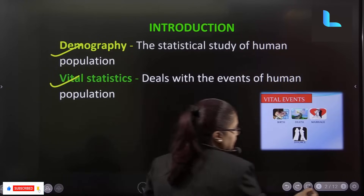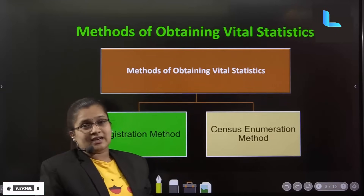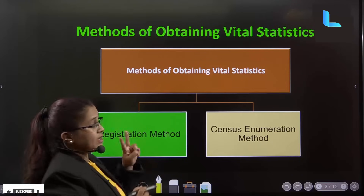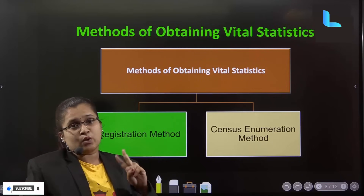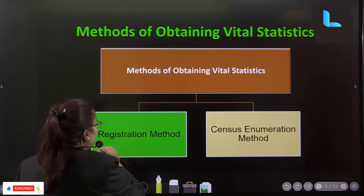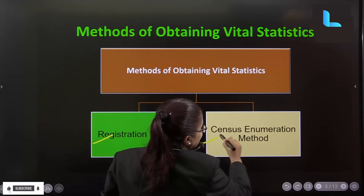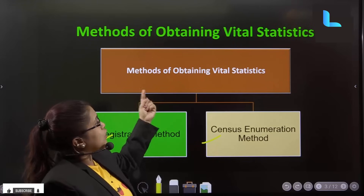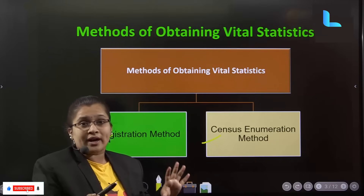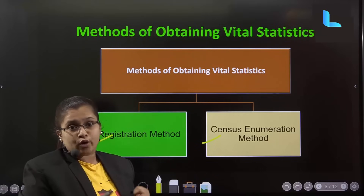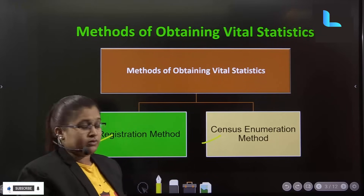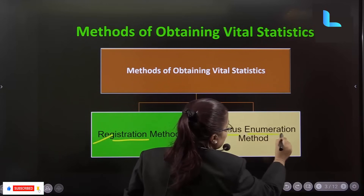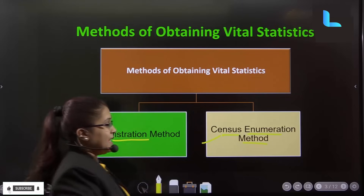Vital events will be recorded. The methods by which vital statistics are obtained are: one, registration method, and two, census enumeration method. These are the methods of obtaining vital statistics — vital events will be recorded and obtained.